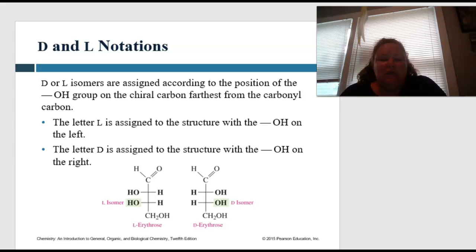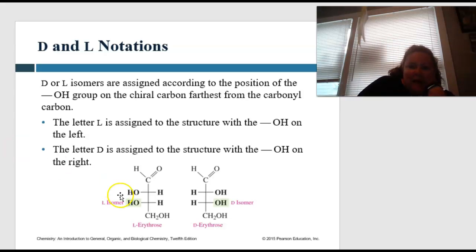Where D is associated with the structure on the right. So, like I said, the L one before, this is L-erythrose. The L isomer has the hydroxyl group, the OH, on the left. Where the D has the OH group on the right.